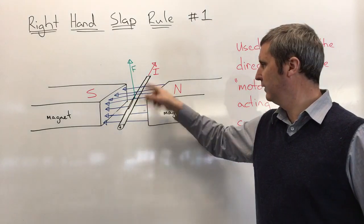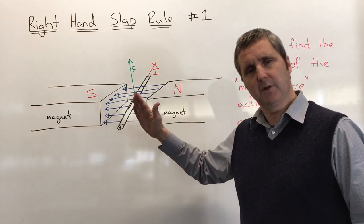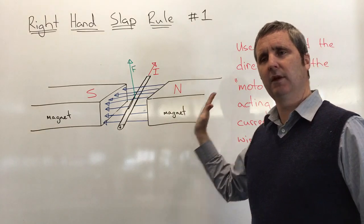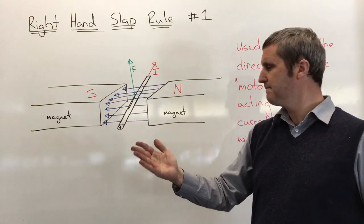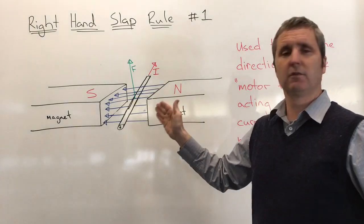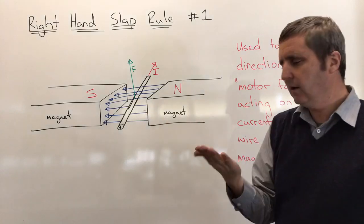But the direction of the force acting on the wire is actually worked out from the direction you would slap something. If you imagine that you slap something with your hand, like a high-five, the direction that comes out from your palm is the direction that the force, the motor force, will be acting on this wire.